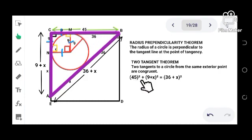So by using the Pythagorean theorem, this relationship among the sides will be 45 squared is equals to (9 + x) squared plus (36 + x) squared. Simplify: you have 2025 plus 81 plus 18x plus x squared is equals to x squared plus 72x plus 1296.